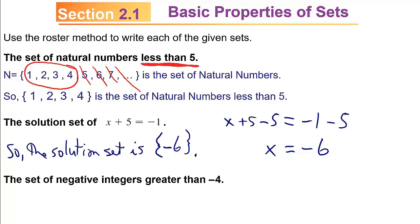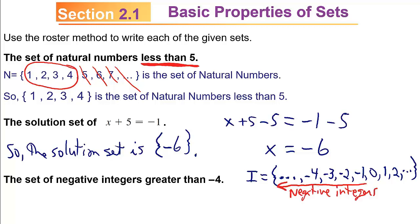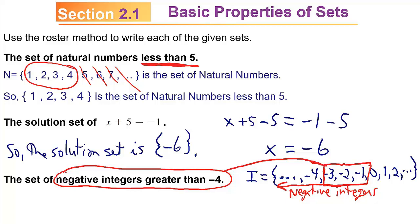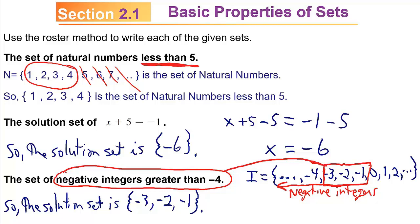The set of negative integers greater than negative 4: remember the negative integers are part of the integers. With zero in the middle, to the right are the counting numbers and to the left are negative 1, negative 2, negative 3, and so on. If you're looking for negative integers greater than negative 4, you don't want to go left of negative 4, and you stop at negative 1 before reaching zero. It didn't say greater than or equal to negative 4, so there are only three: the solution set is the set consisting of negative 3, negative 2, and negative 1.